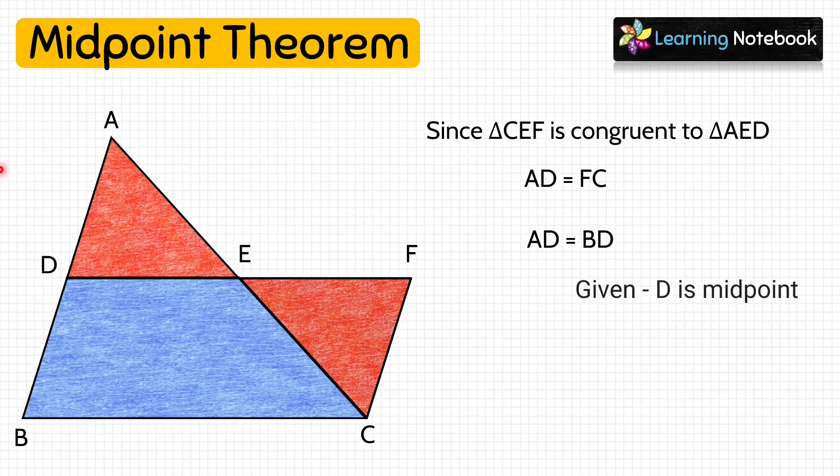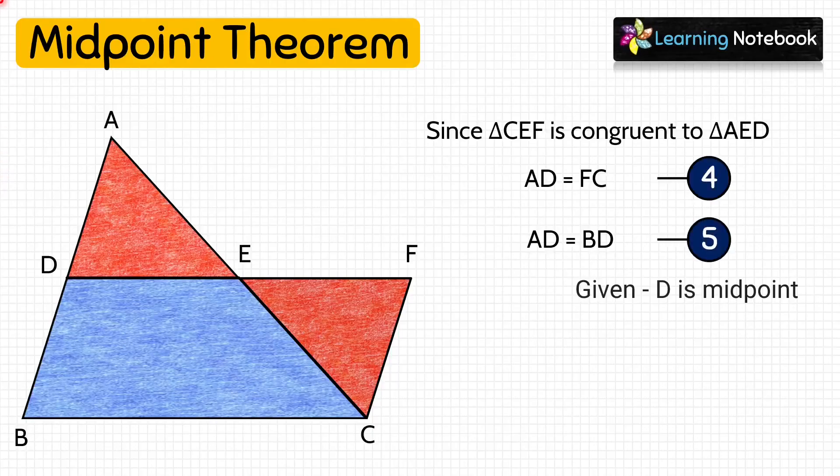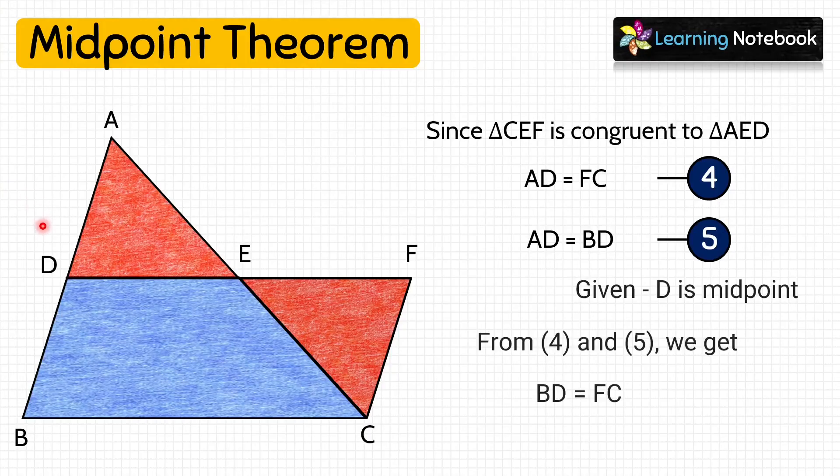Now let's mark them as 4 and 5. Now from 4 and 5 we can say FC equals to BD. Mark this as 6.